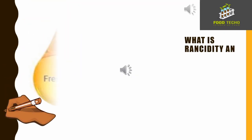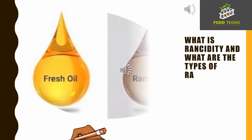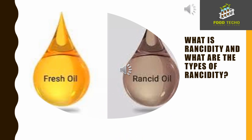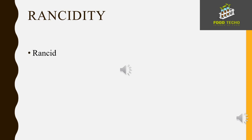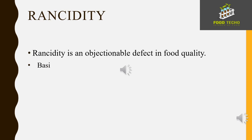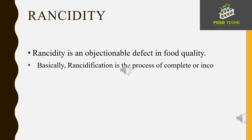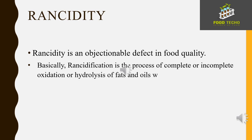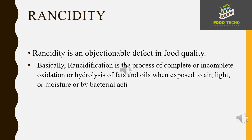The topic which we are going to study today is what is rancidity and what are the types of rancidity. Let us first see the definition of rancidity. Rancidity is an objectionable defect in food quality. Basically, rancidification is the process of complete or incomplete oxidation or hydrolysis of fats and oils when exposed to air, light or moisture or by bacterial action, resulting in unpleasant taste and odor.